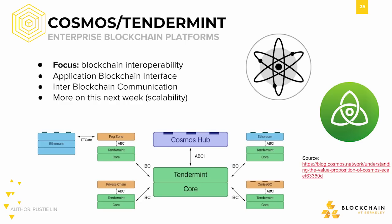Cosmos is an initiative to connect blockchains together, focusing on blockchain interoperability. For example, if you currently want to exchange Bitcoin for Ether, you'd have to go through an intermediary like an exchange. Cosmos, however, will allow connecting multiple blockchains to the same hub, powered by the consensus mechanism Tendermint. Tendermint also provides ways for users to build their own blockchain applications in any language through the application blockchain interface, and blockchains talk to each other through the inter-blockchain communication protocol.